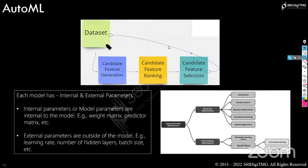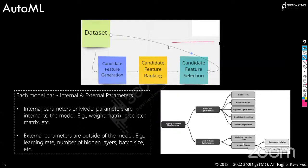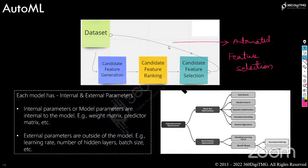Once you have your dataset, candidate feature generation means generating a lot of features from the data, then ranking your features and selecting the important ones. This part is automated to a great extent — it's called feature selection. You figure out the various features, rank them in order of importance, and select the right features.